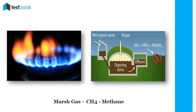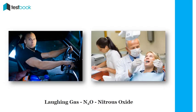Marsh gas, or methane, is a greenhouse gas. Methane is naturally found underground as well as under the sea floor, and it can also be manually created using biogas.